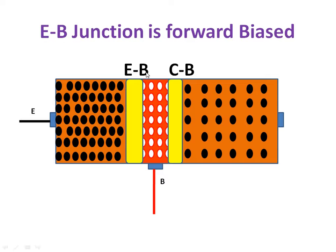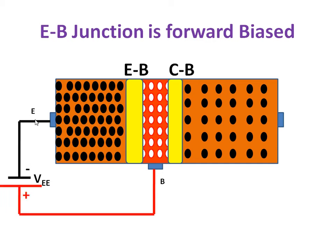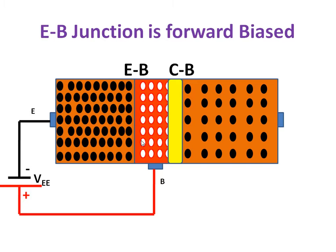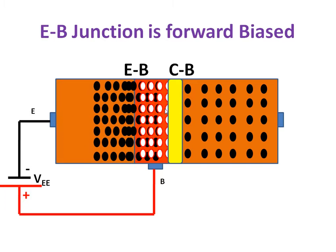The emitter-base junction is forward biased — emitter is negative connected to negative, and base is positive connected to positive. When we apply a voltage more than 0.7 volts, there is a breakdown of the depletion layer. Because of this breakdown, more electrons move into the base region or p region.